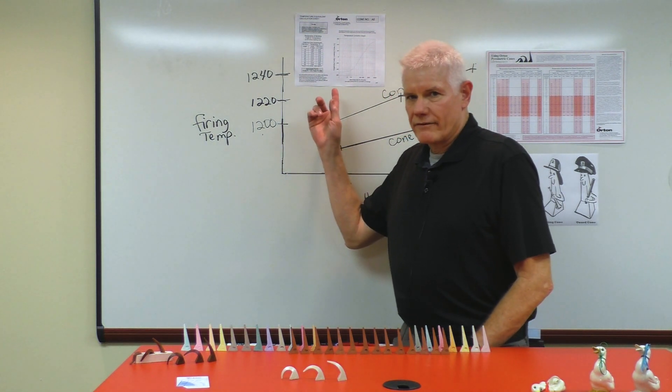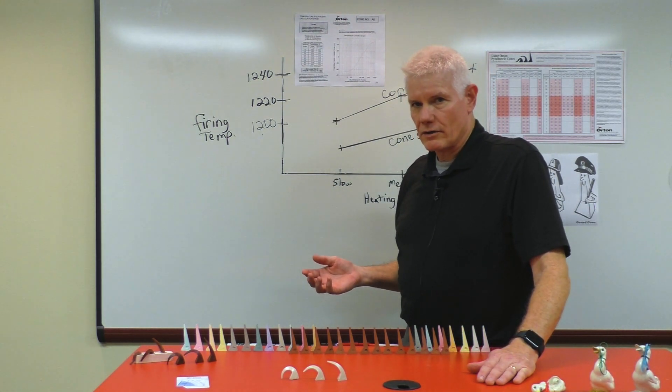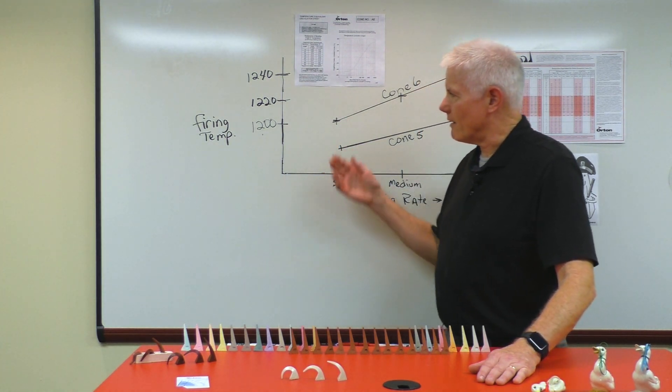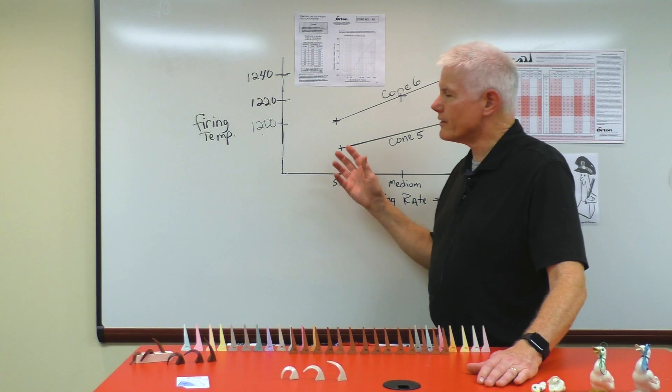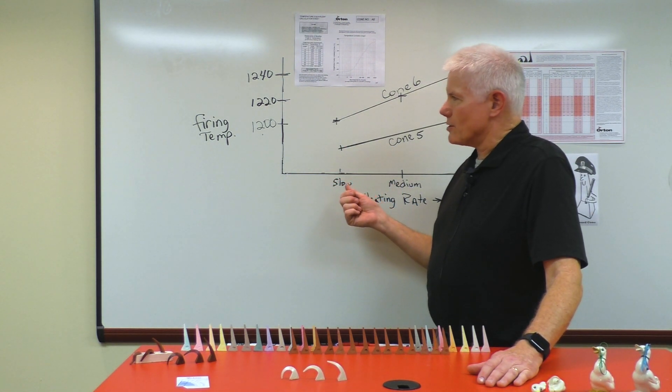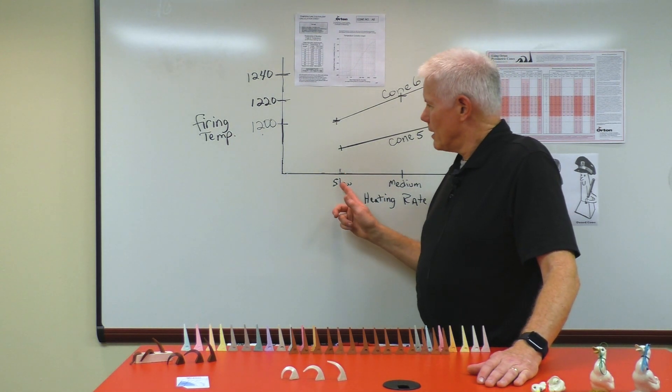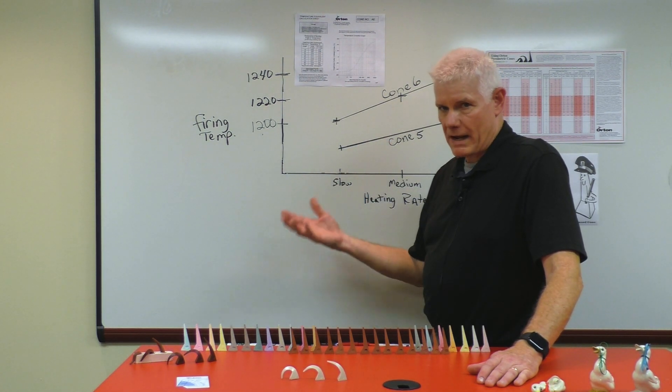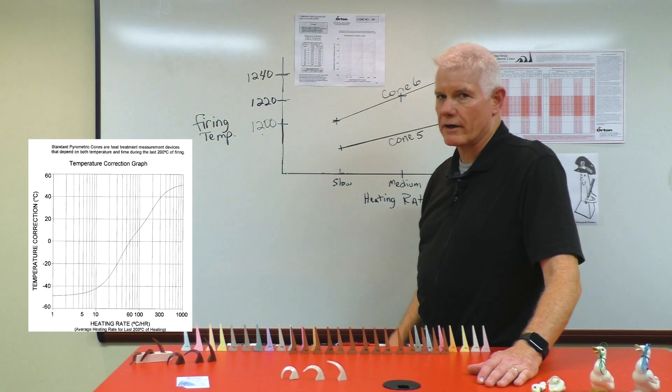This graph is representing all the data that we have acquired over the years on our cones and this one is specifically for cone 6 and I plotted the information for you. What this shows is that you can fire on a slow heating rate and deform cone 6 to within the firing window that makes cone 6 bend by actually only going to 1200 degrees.